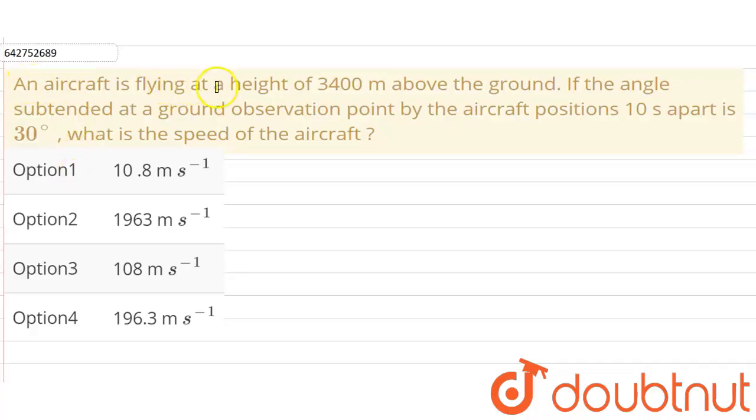An aircraft is flying at a height of 3400 meters above the ground. If the angle subtended at a ground observation point by the aircraft positions 10 seconds apart is 30 degrees, what is the speed of the aircraft?